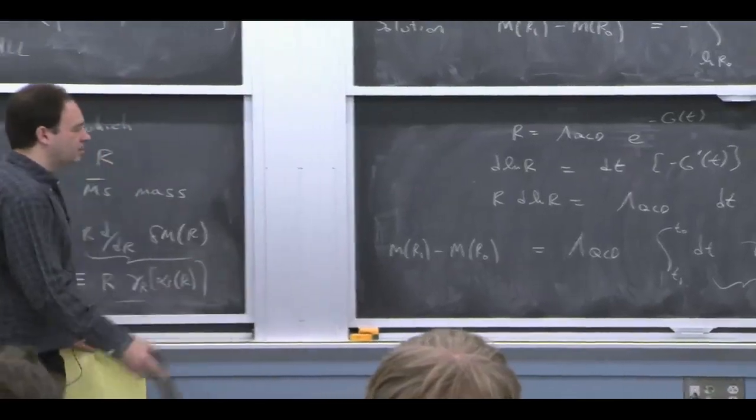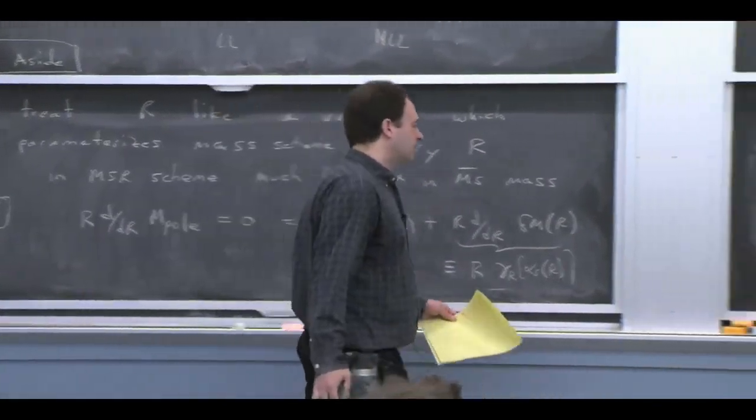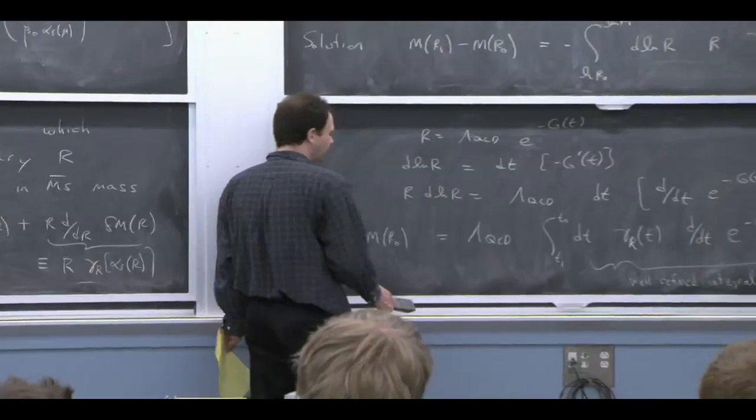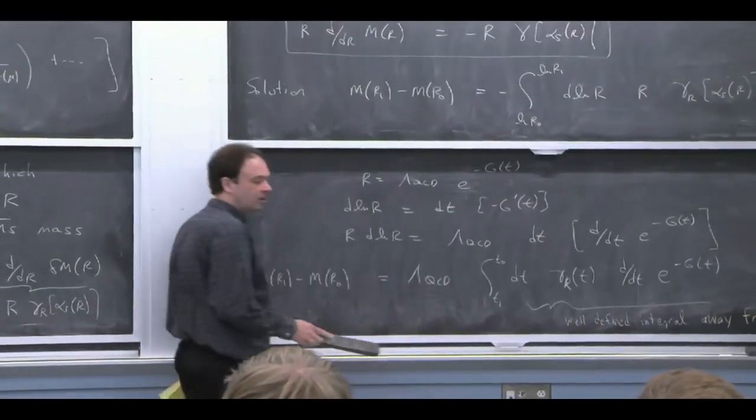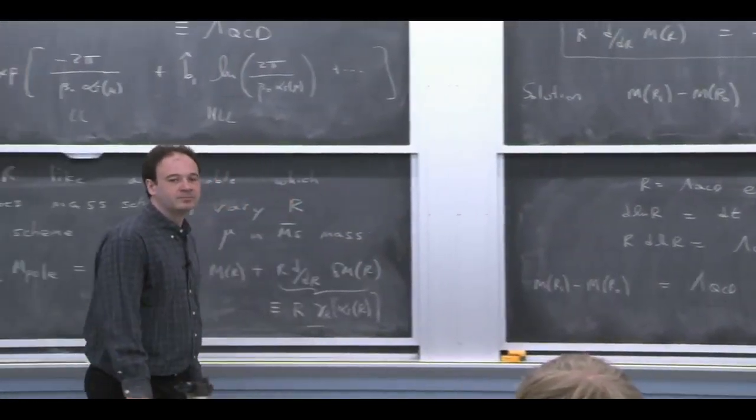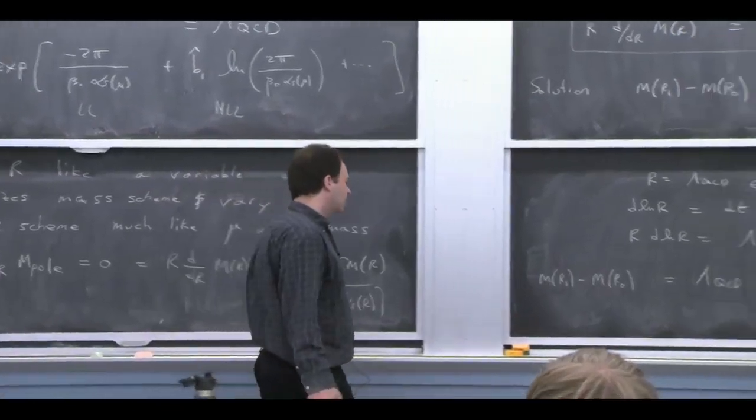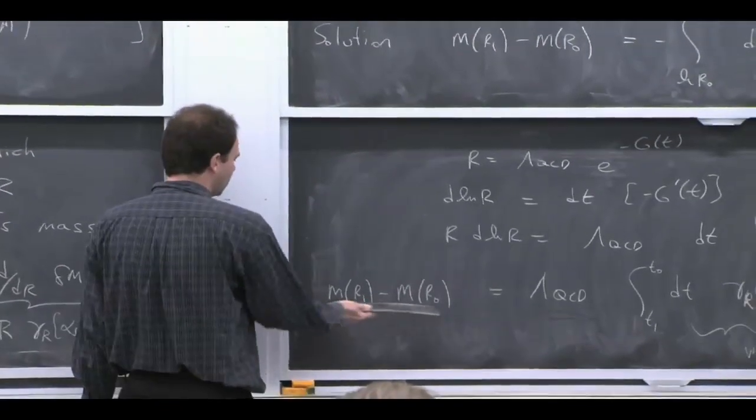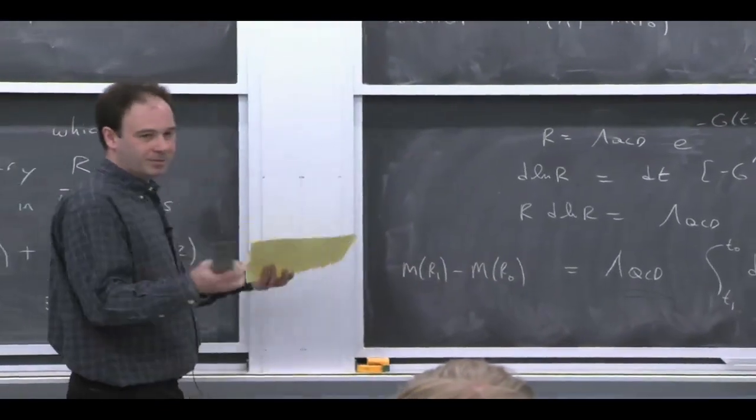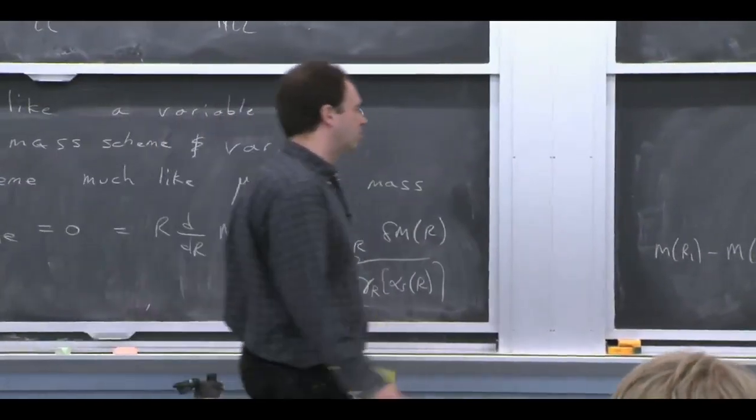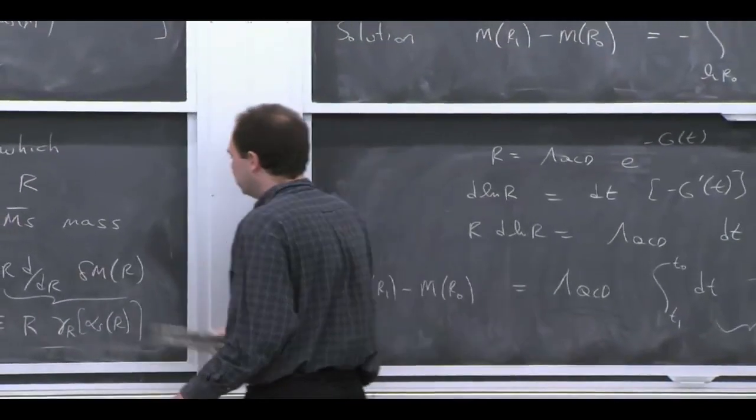And taking the difference of two of them should, again, give us something that's not sensitive to renormalon problems. But it's interesting that you see lambda QCD popping out. And that's because these two masses and the difference of these cutoffs is related to absorbing a different amount of these fluctuations, which were related to lambda QCD.